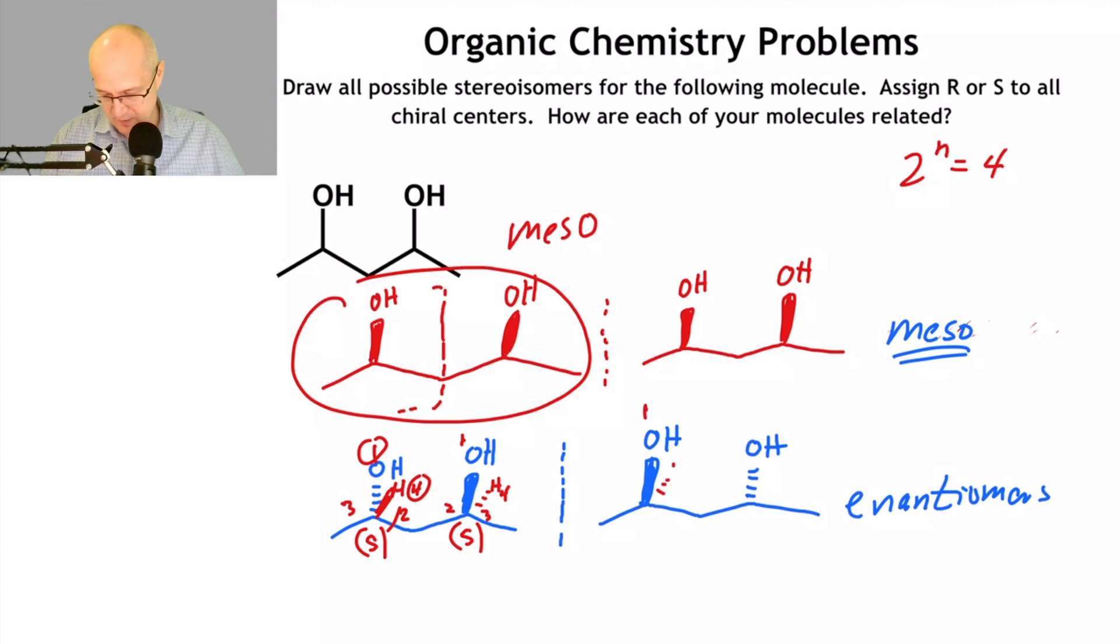We have a one, four, two, three. That's R. So it's looking pretty good. That's also R. So these are most definitely enantiomers.